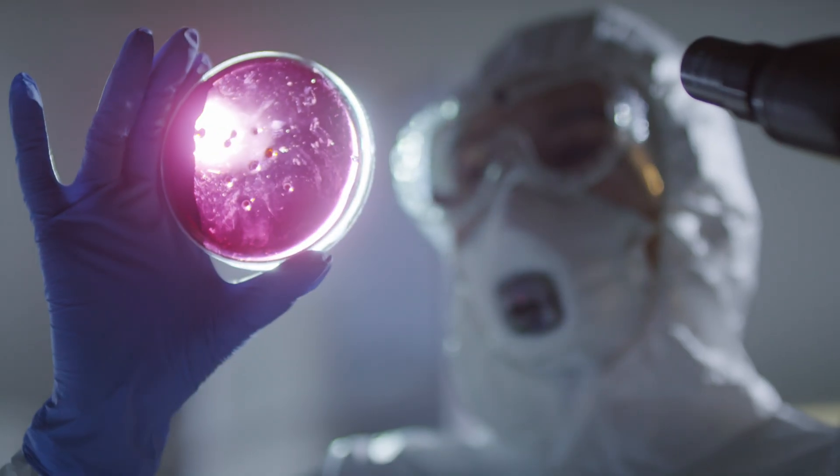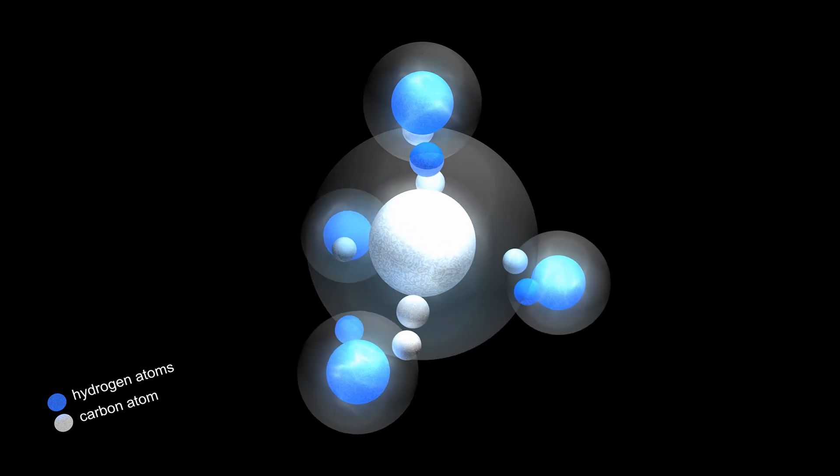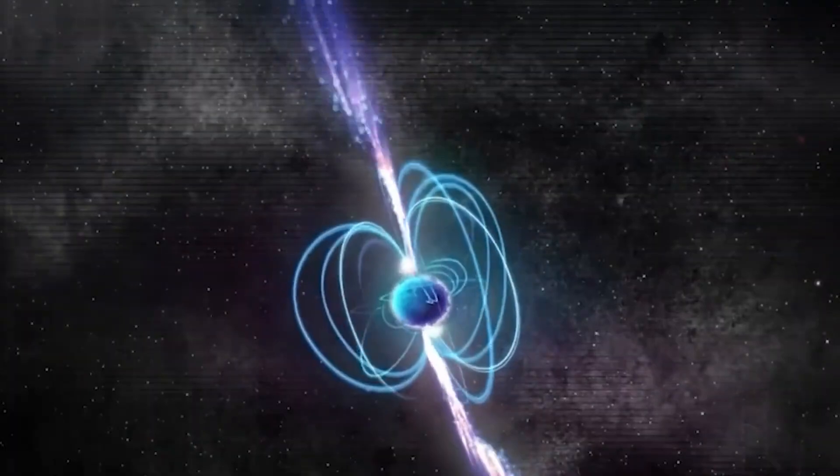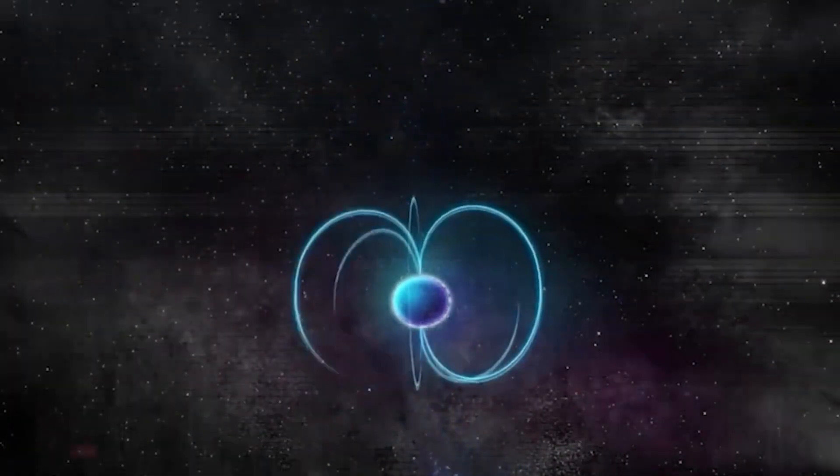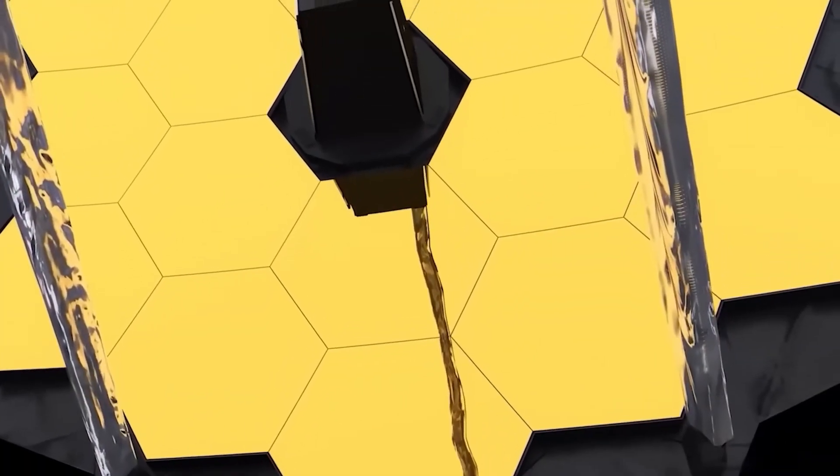For the first time, carbon-bearing molecules, specifically methane and carbon dioxide, have been detected on this distant exoplanet. This groundbreaking revelation comes courtesy of the unparalleled James Webb Space Telescope.